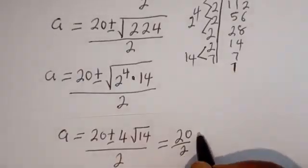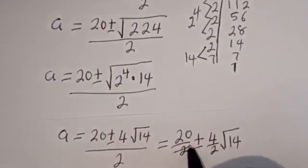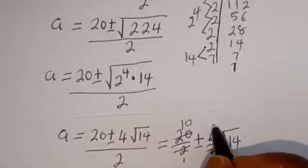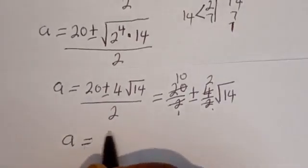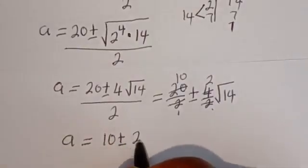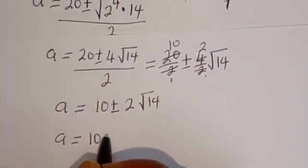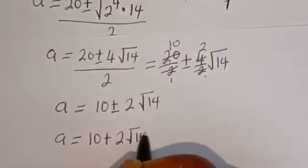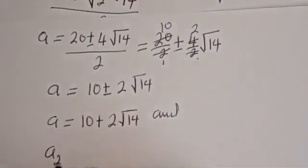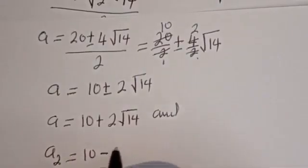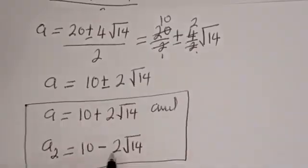Therefore a equals 20 divided by 2, plus or minus 4 divided by 2 times root 14, which gives a equals 10 plus or minus 2 root 14. So a1 equals 10 plus 2 square root of 14, and a2 equals 10 minus 2 square root of 14.